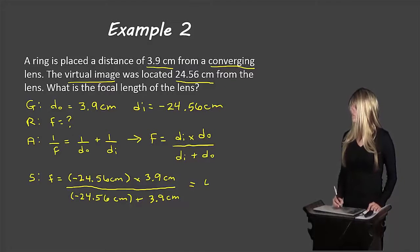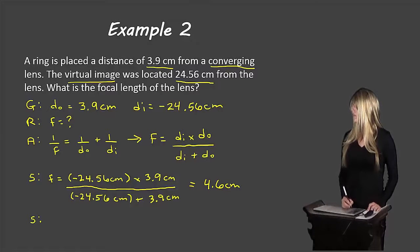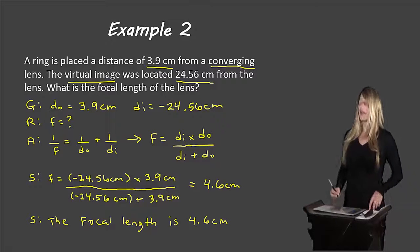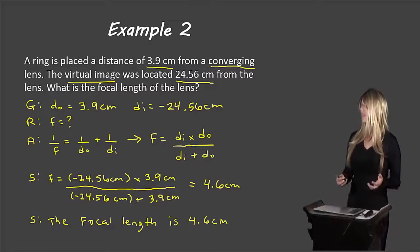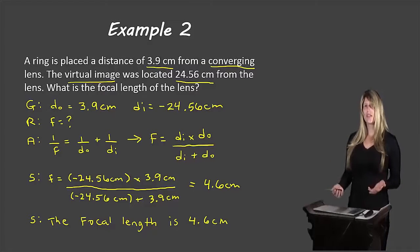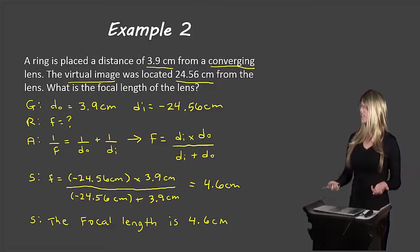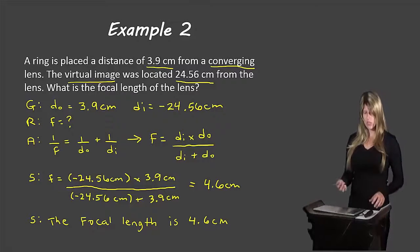Substituting: F equals negative 24.56 centimeters times 3.9 centimeters over negative 24.56 centimeters plus 3.9 centimeters, which gives 4.6 centimeters. Our answer is positive, and the focal length is positive for a converging lens — which matches the original question. So the focal length of the converging lens is 4.6 centimeters.